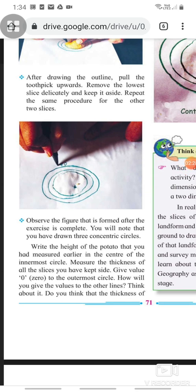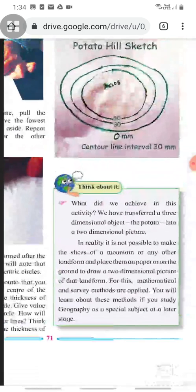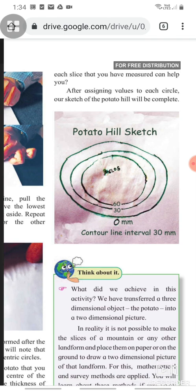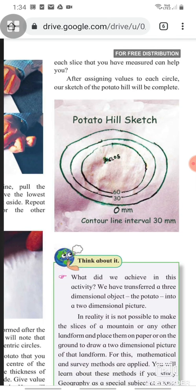Measure the thickness of all the slices you have kept aside. Give value 0 to the outermost circles. How will you give the values to other lines? Think about it. Do you think that the thickness of each slice that you have measured can help you? Now, after assigning the values to each circle, our sketch of the potato hill will be complete.